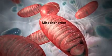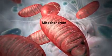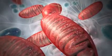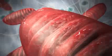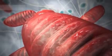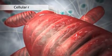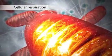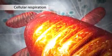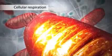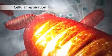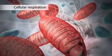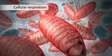The mitochondrion is an organelle that is the powerhouse for both animal and plant cells. During a process called cellular respiration, the mitochondria make ATP molecules that provide the energy for all of the cell's activities. Cells that need more energy have more mitochondria.